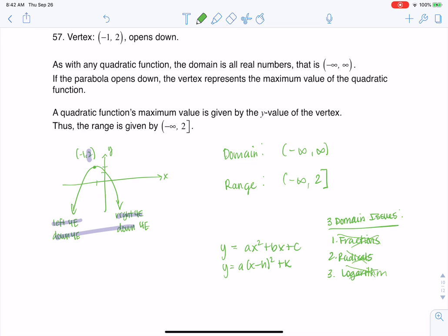So, domains and ranges can have parentheses or brackets, and I just want to mention that that's different from when we were talking about intervals of increasing and decreasing. Intervals of increasing and decreasing only have parentheses, but you can have parentheses or brackets on domains and ranges. Alright, thanks so much, bye!